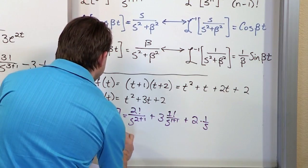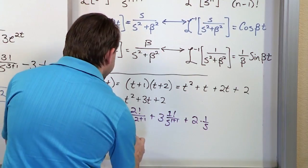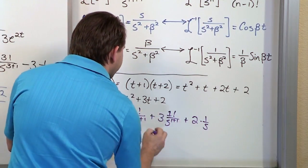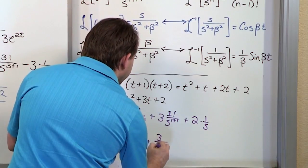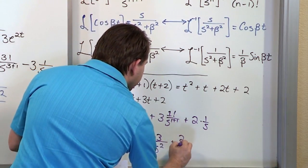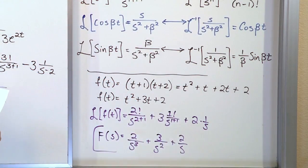So then we can write the final answer. f of s is equal to, this reduces to 2, s cubed on the bottom. 3 times 1 factorial is just 3 over s squared. And this is 2 over s. So we get 2 over s cubed plus 3 over s squared plus 2 over s.